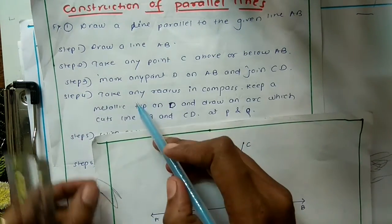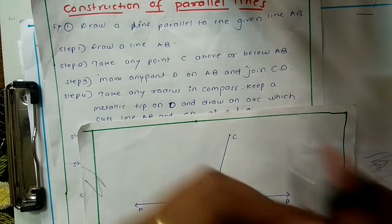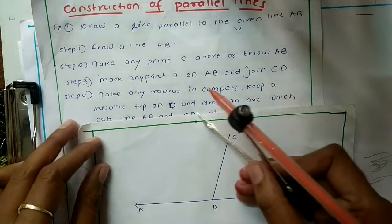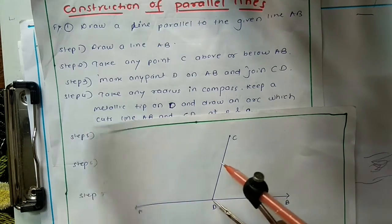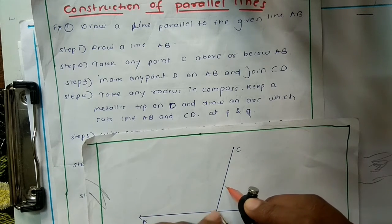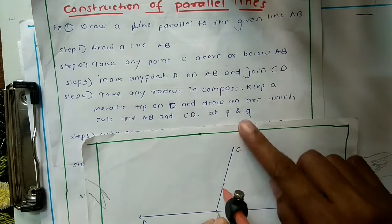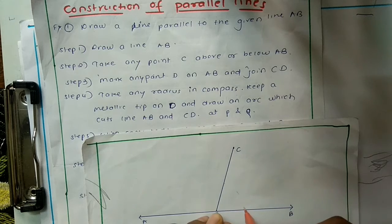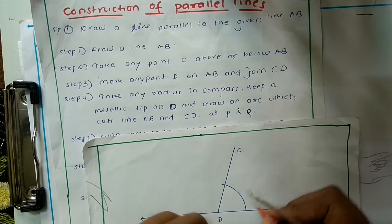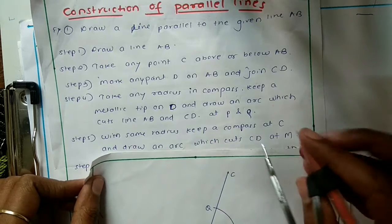The fourth step is to take any radius in the compass. Keep the metallic tip on D and draw an arc which cuts line AB and CD at points P and Q. You can take any convenient radius, but fix it before drawing the arc. Let us name the intersection points as P and Q.